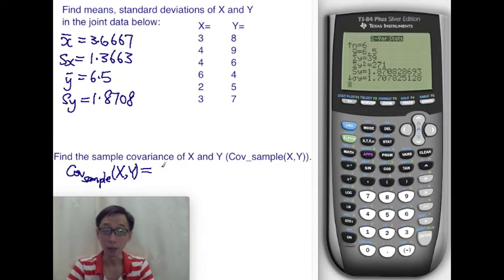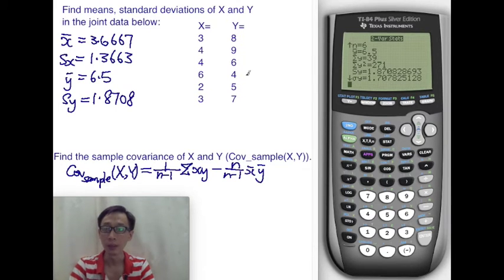The calculator-friendly formula is actually 1 over n minus 1, sum of x times y, minus n over n minus 1, x bar, y bar. Now, you can see that we already have x bar and y bar. And we know that n, the pairs, n pairs, there are 6 of them. So n is 6. So this calculator formula is easy because we just need to do 1 over n minus 1 times sum of x, y.